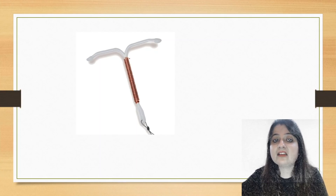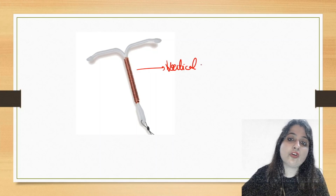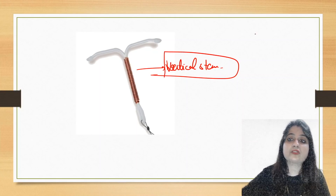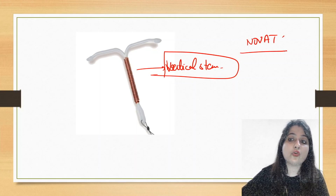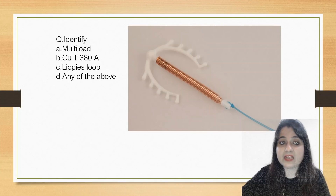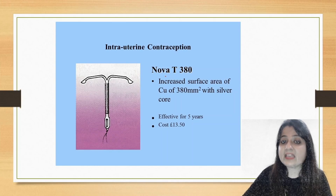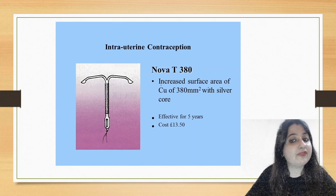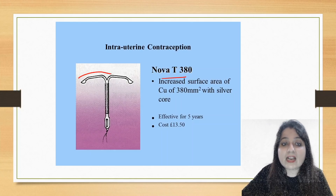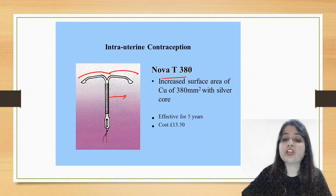Now look at this — a curved T shape. The copper wire is only on the vertical stem. This is Nova T, also known as Copper T375. Nova T is very important. It is curved, with copper wire only on the vertical stem, and has a shelf life of five years. Nova T 380 is also available.